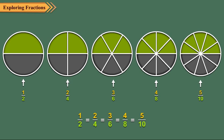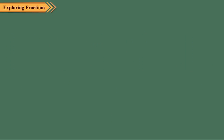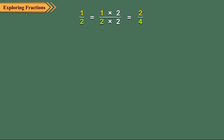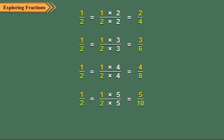When we multiply the numerator and denominator of one upon two by two, we get two upon four. When we multiply the numerator and denominator of one upon two by three, we get three upon six. Similarly, when we multiply the numerator and denominator of one upon two by four and five, we get four upon eight and five upon ten, respectively.